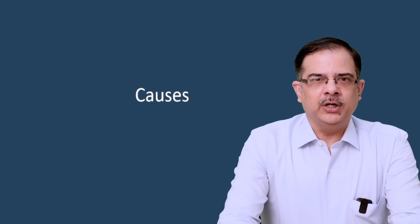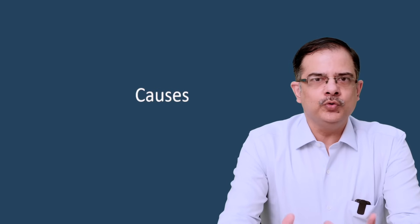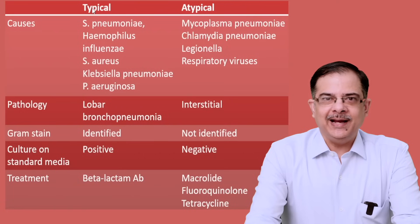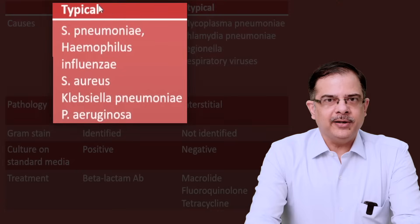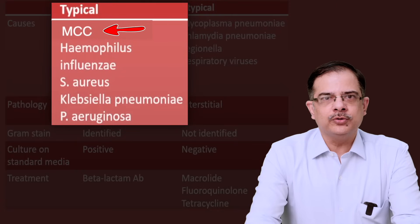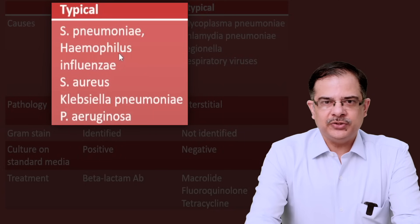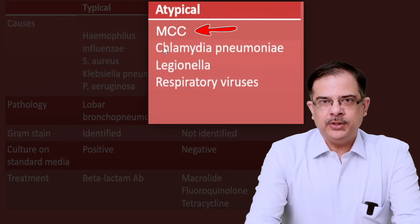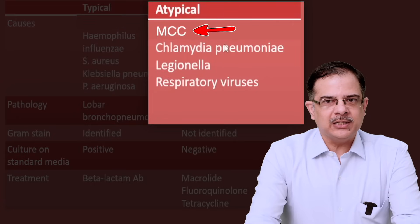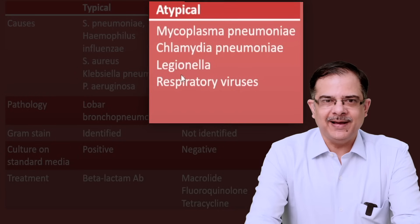Starting with the causes of Community Acquired Pneumonia. It is traditionally divided into two groups: typical and atypical pneumonias. The causes of typical pneumonia are Streptococcus pneumoniae — the most common cause of pneumonia overall — as well as Haemophilus influenzae, Staph aureus, Klebsiella, or Pseudomonas. For atypical pneumonia, the most common cause is Mycoplasma pneumoniae. Other causes include Chlamydia, Legionella, and respiratory viruses.